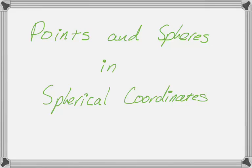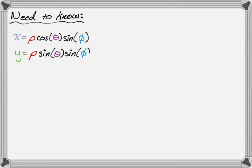Okay, in this video we are going to talk about writing points and spheres using spherical coordinates, and we're going to do it kind of by example. So there's a couple things that you need to know. Right away you need to know that x is rho cosine theta sine phi, y is equal to rho sine theta sine phi, and then z is equal to rho cosine phi. So those are the basic equations, you definitely need to know those.